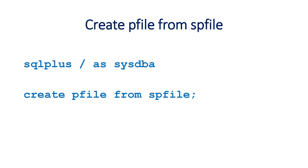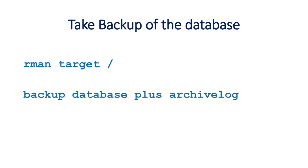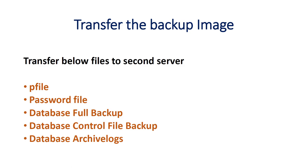On the source server we need to create a P file, and we will be transferring this P file to the target. We will be creating a P file and taking the backup of the database using the 'backup database plus archive log' command. There are other ways to take the backup such as level 0 or level 1 — you can use any type of backup you are comfortable with. Once you have the backup, you will transfer these files to the target server: the P file, the password file, the database full backup, the database control file backup, and the database archive logs.